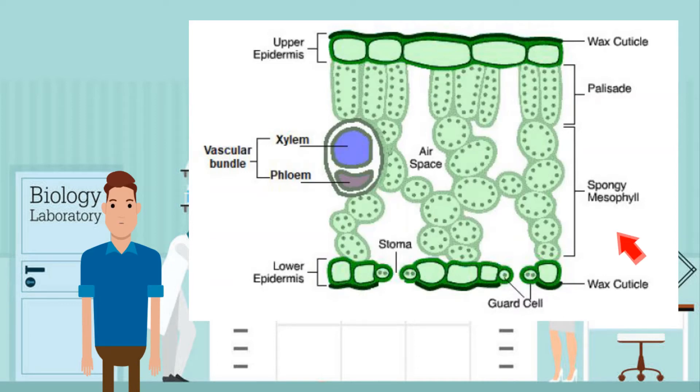Moving on, the spongy mesophyll. These have more round-shaped cells with lots of air spaces between them. They can still photosynthesize. The air spaces are what allows the plant to carry out gas exchange.